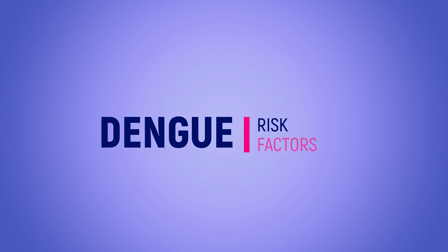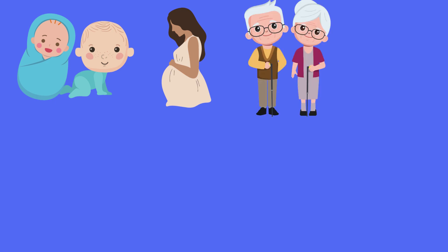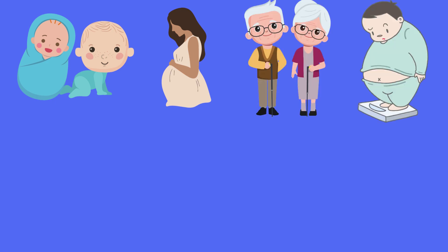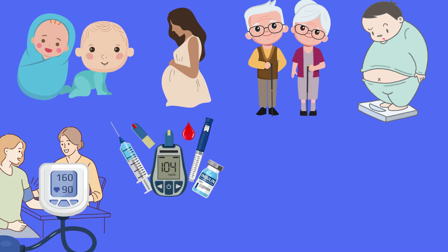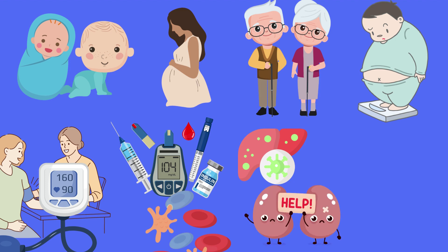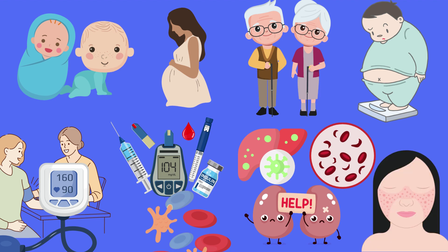Coming to risk factors for Dengue, one needs to be very careful while dealing with these cases. First of all, infants and young children are very prone, pregnant women, elderly persons, obese persons, persons with diseases like hypertension and diabetes mellitus, immunocompromised persons, persons with hemolytic conditions, persons dealing with chronic liver disease and chronic kidney disease, hemoglobinopathies — for example sickle cell disease — and autoimmune diseases.